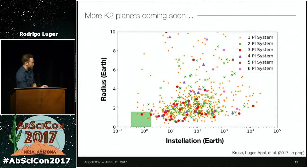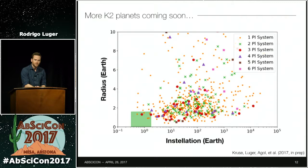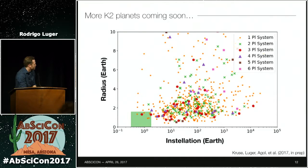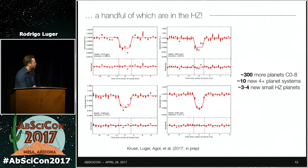The science coming out of this — work in preparation led by Ethan Kruse at University of Washington — is finding many more planets previously missed by other pipelines. Relevant to today's session is that little region: the habitable zone. Using the optimistic habitable zone bounded by Venus and Mars, three of these points are new and have not been found by previous pipelines. In total, expect something like 300 more K2 planets in the first eight campaigns, several multi-planet systems, and three to four new small habitable zone planets coming soon.